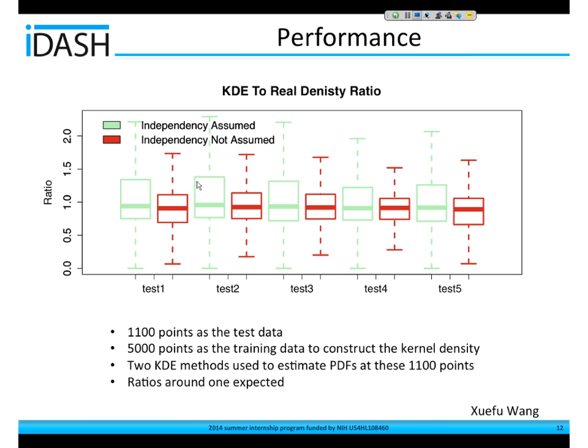We calculated the ratios between our estimated probability density and the real density. We expect to see the ratios to be around 1, because that is an indicator that our estimation is close to the real density. As you can see, both the previous methods and our method show ratios that cluster around 1, but my method has a shorter, narrower range. That is an indicator that our method outperforms the previous one.